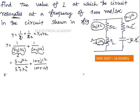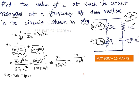At resonance, the susceptance part is zero, meaning the imaginary part equals zero. So ignore the real parts (5 and 10) and consider only the imaginary parts. Setting the imaginary part to zero: -XL/(25 + XL²) should equal 12/244. Wait — equating magnitudes: XL/(25 + XL²) = 12/244.